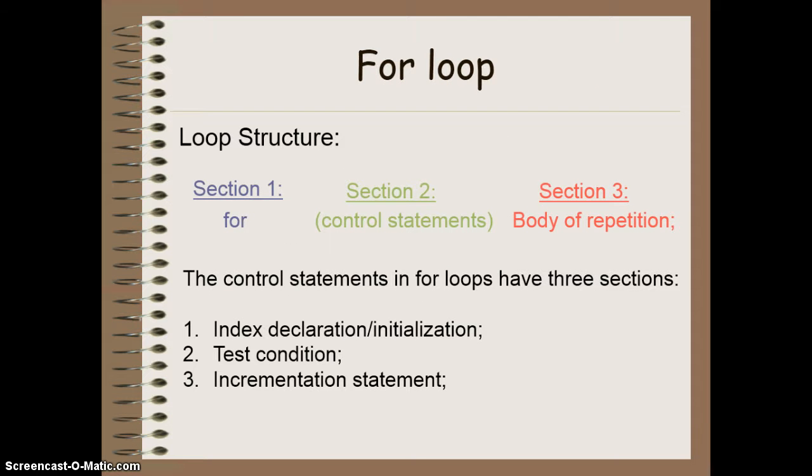So the first one we were going to look at was the for loop. And it has the structure of the keyword for, and then your control statement is placed in smooth brackets, followed by the code that is to be repeated, known as the body of repetition. The control statements themselves, inside the smooth brackets, have three sections. The first is our index declaration and initialization. The second is a test condition. And the third is the incrementation statement.